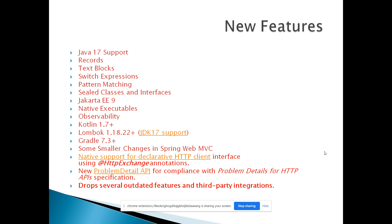Also, observability APIs are available to get metrics and tracing data from the application. Library versions have also been upgraded: Kotlin 1.7+, Lombok 1.18, Gradle 7.3+ and higher.